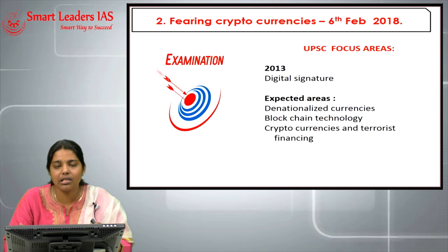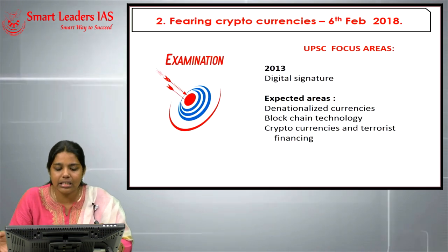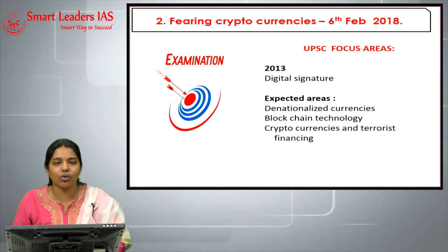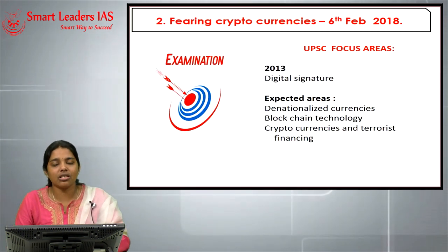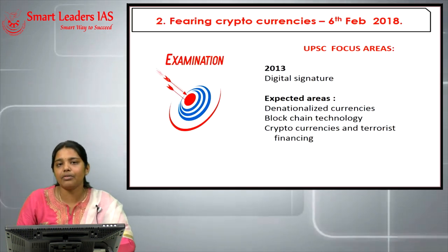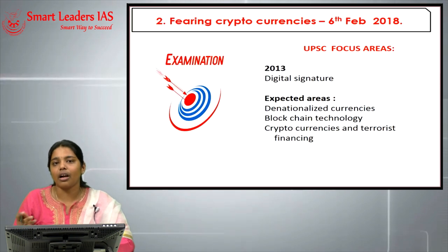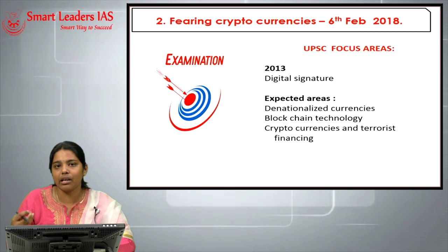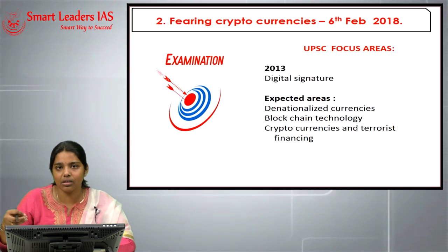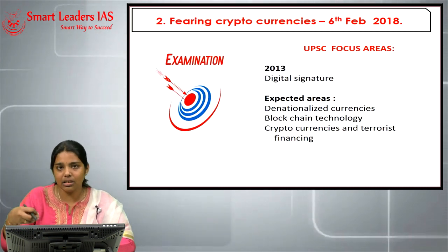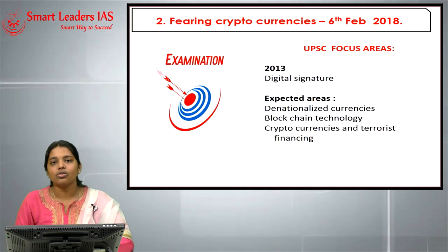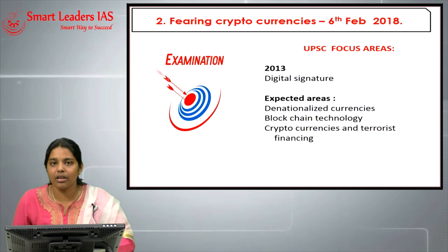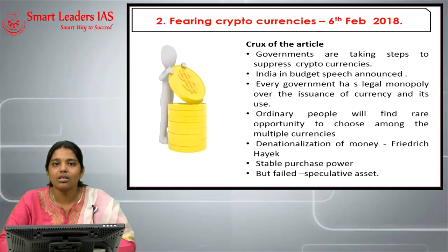Expected UPSC areas include: denationalized currencies, blockchain technology, and in GS3 — how cryptocurrencies can fund terrorist financing and facilitate illegal arms and drug trade via dark web transactions, which was reported in the last couple of years.